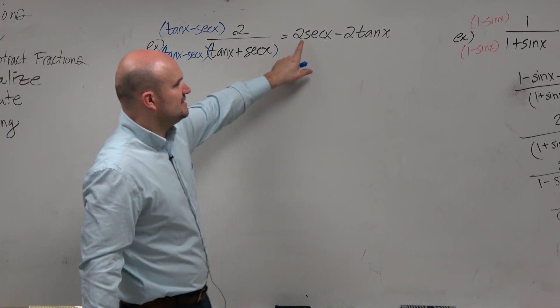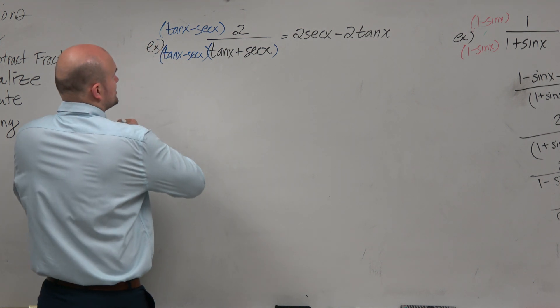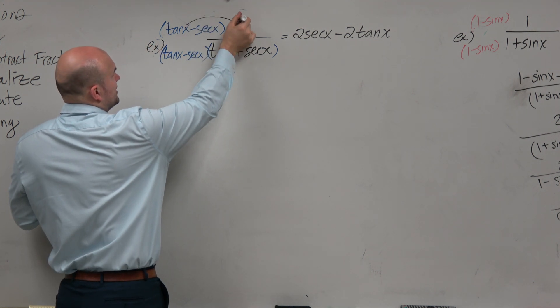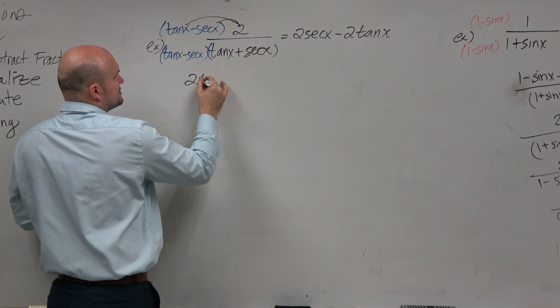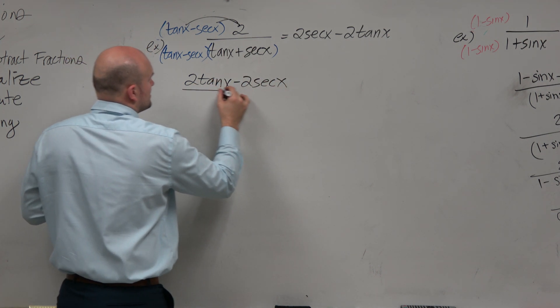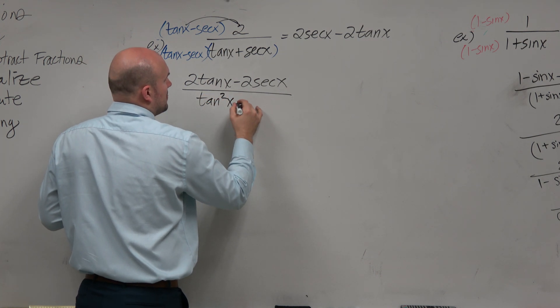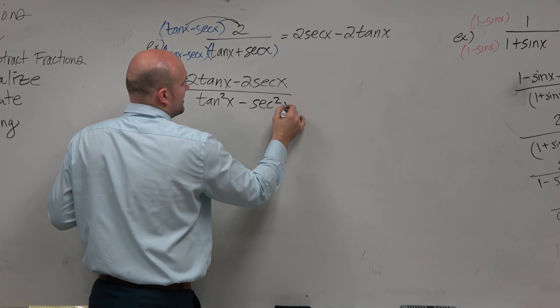Now I can see that the two is distributed to both terms. So I'm just going to go ahead and distribute the two here. When I do that, I get 2 tangent of x minus 2 secant of x, all over tangent squared of x minus secant squared of x.